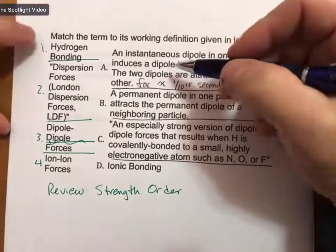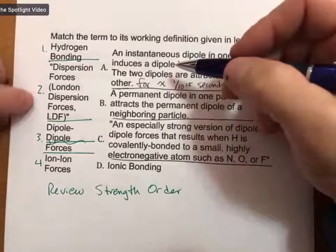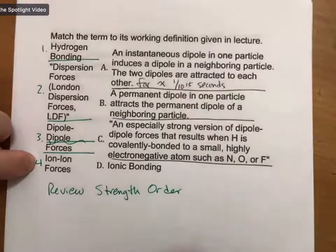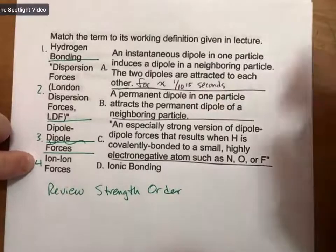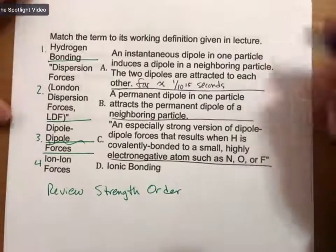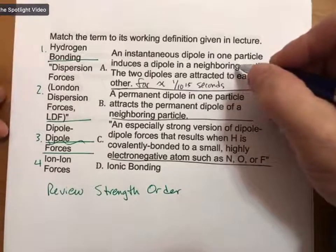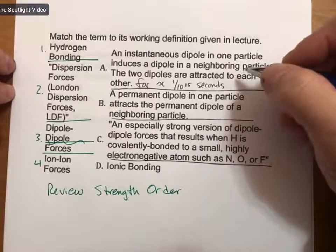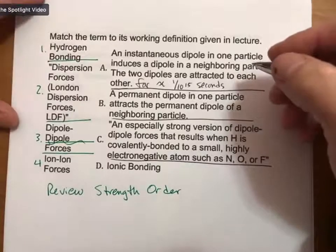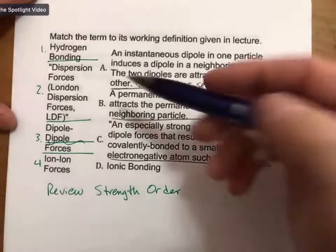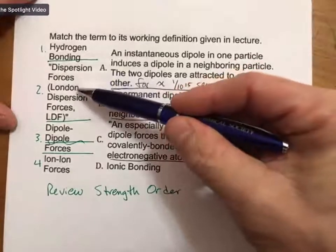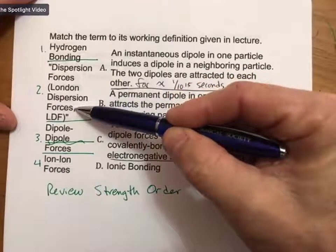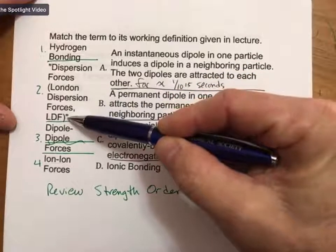For A, I've got number one, two, three, and four over here. Can anybody tell me one, two, three, or four, or by name which one is A? London Dispersion Forces. Thank you, Selden. Yes, London Dispersion Forces. Dispersion Forces is one name for them. London Dispersion Forces is another name. LDF is an abbreviation.